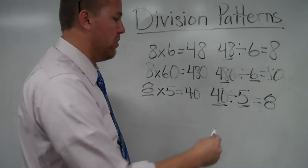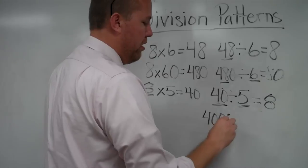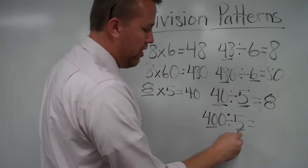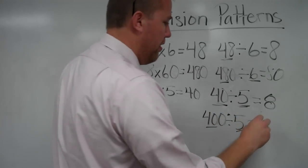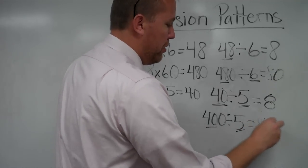Now, as we're looking at these patterns, 400 divided by 5 equals, well, here's the main fact. We added a 0 to the dividend in the fact that we know, so it equals 80.